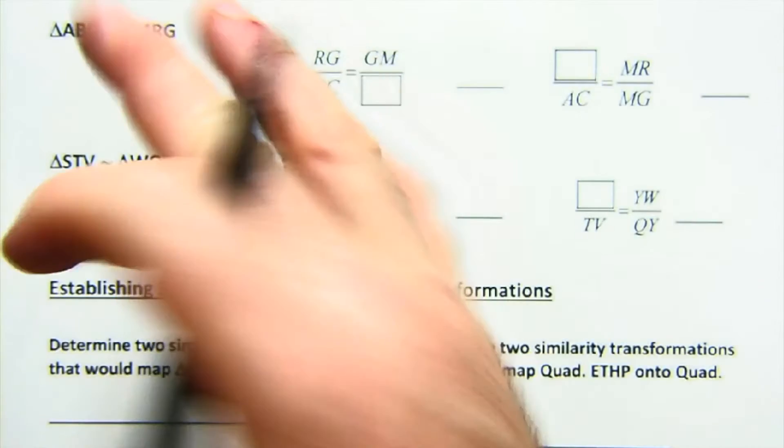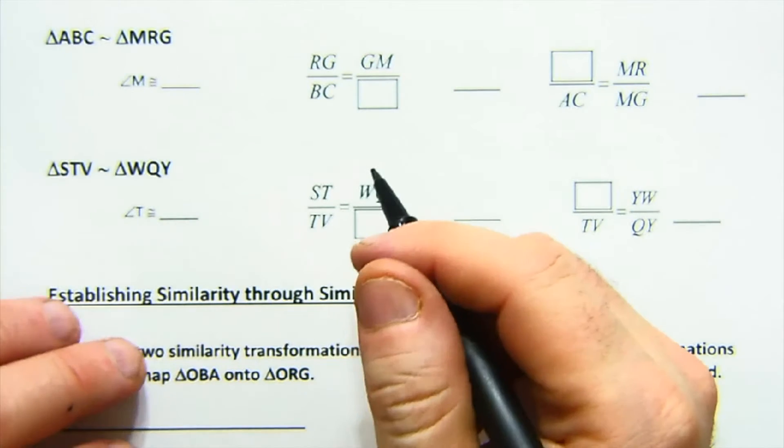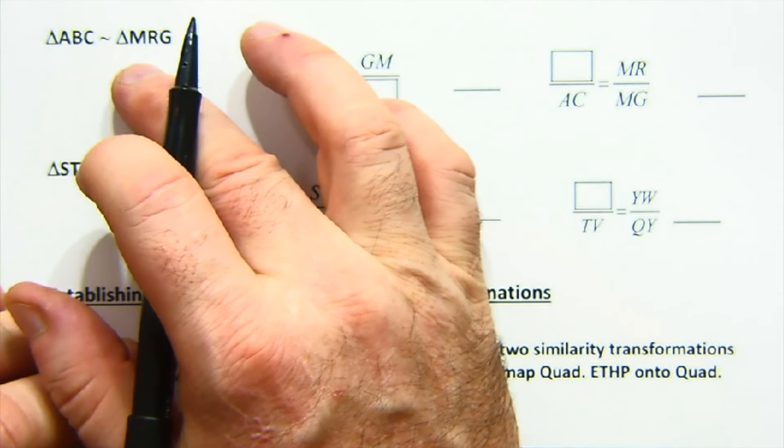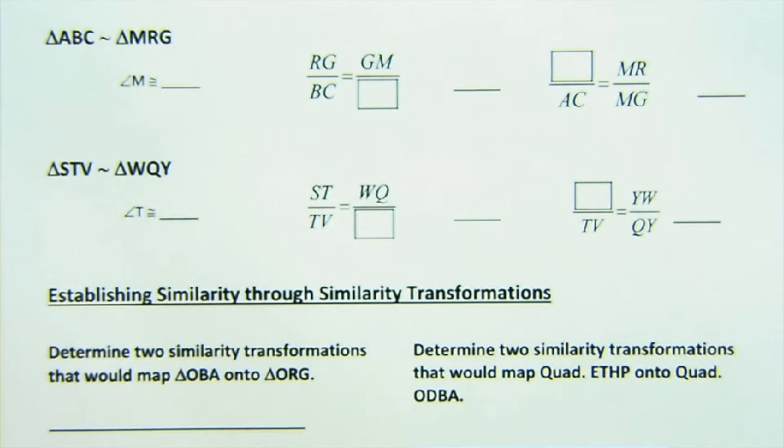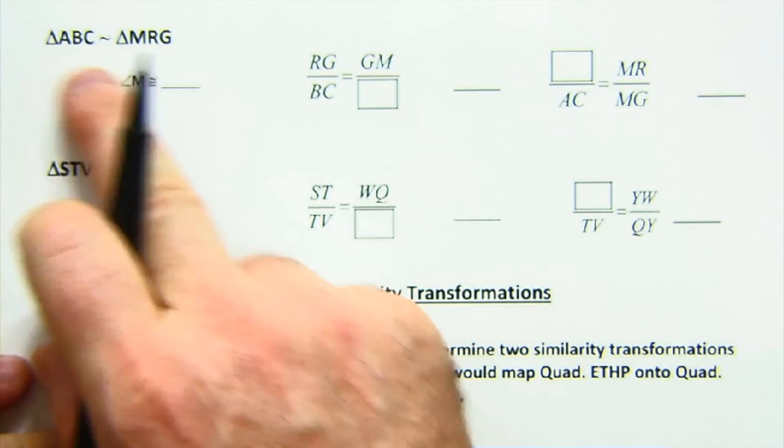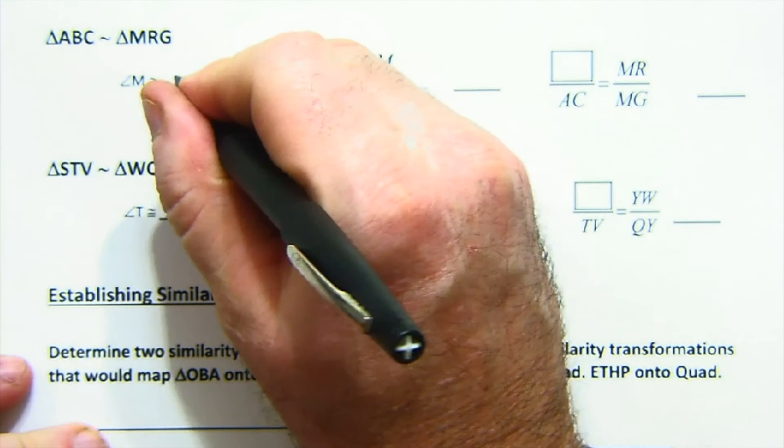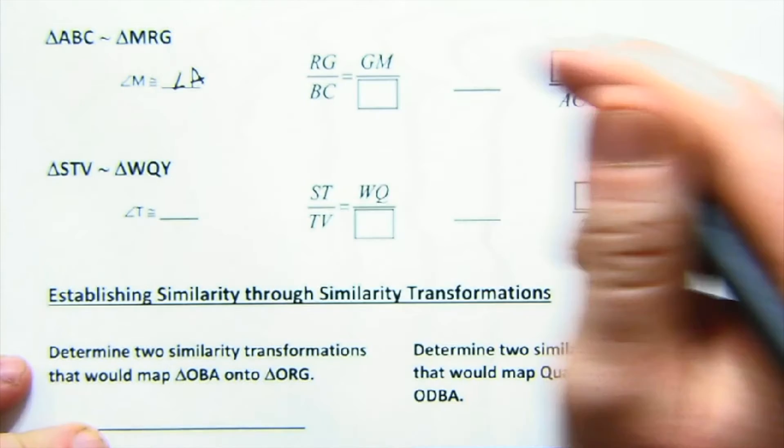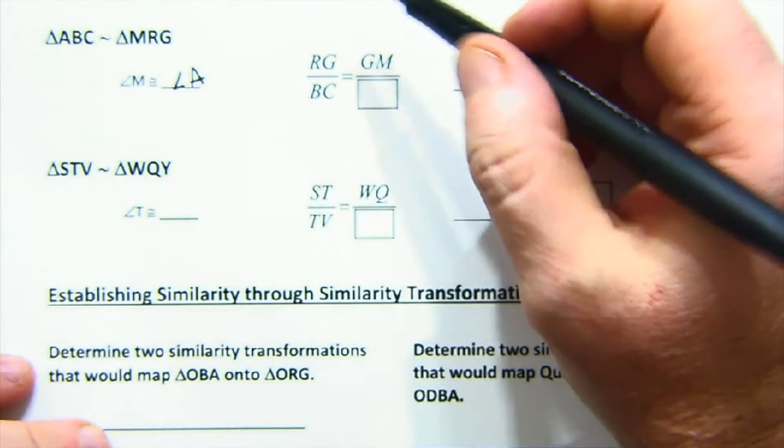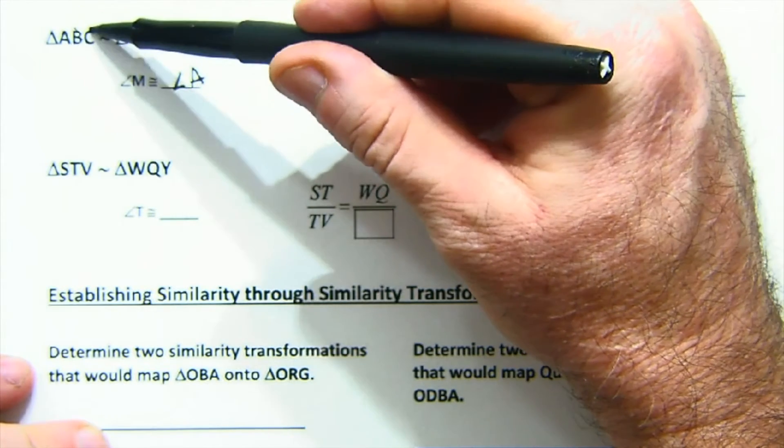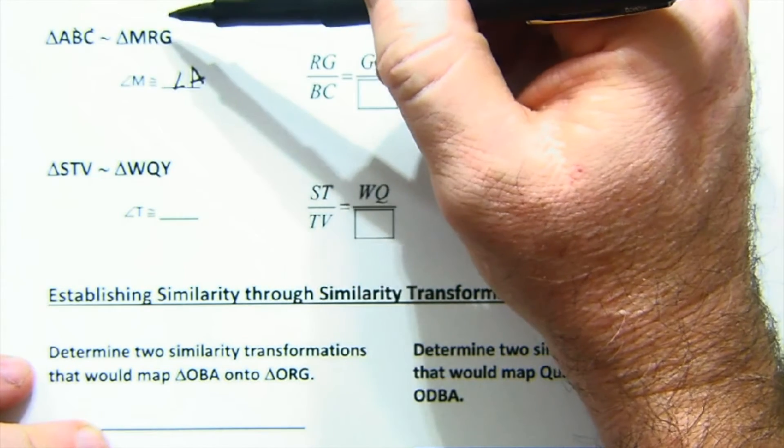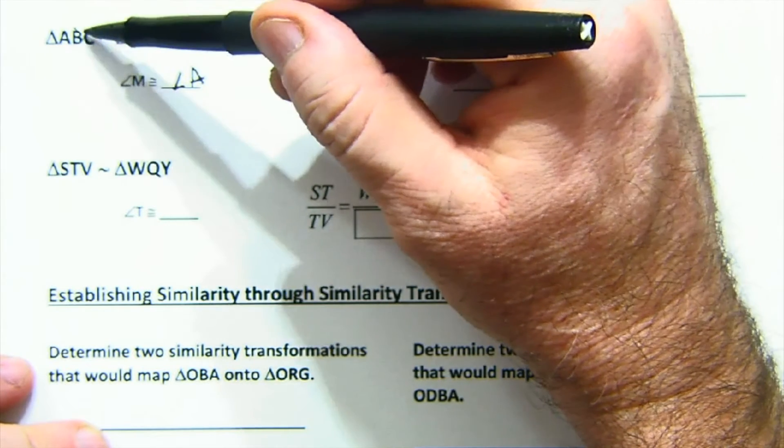Similarity statements are just like congruence statements. Remember what similarity means though is that it preserves angles and the sides are proportional. So yes, angle N would match angle A. They would be identical.